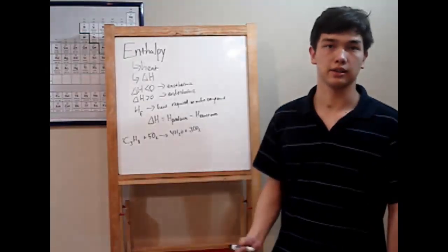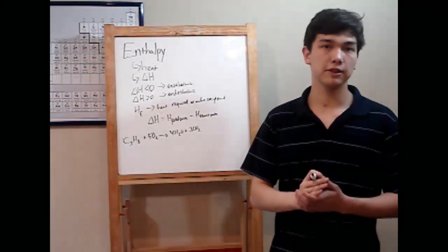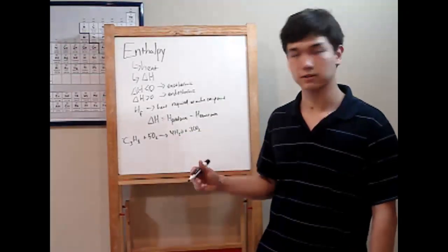C3H8 plus 5O2 goes to 4H2O and 3CO2. And you're asked to calculate delta H. Well, you'll be given a few numbers whenever you encounter one of these, and those will be heats of formation.